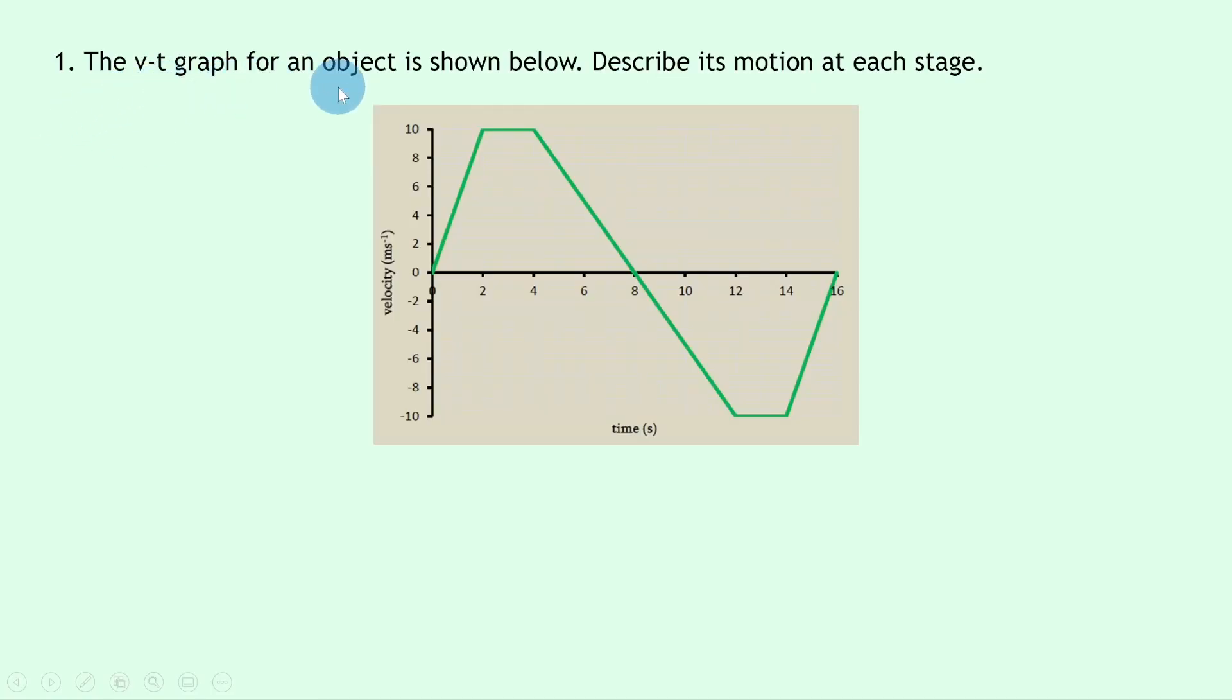Question one says the velocity time graph for an object is shown below. Describe its motion at each stage.